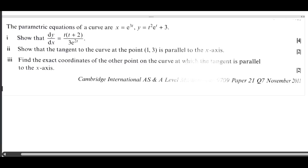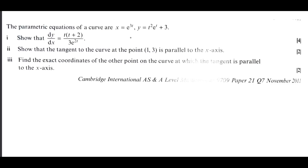The parametric equations of the curve are given: x equals e to the power 3t, and y equals t squared times e to the power t plus 3. We have to show that dy/dx equals t times (t plus 2) divided by 3e to the power 2t. Then we have to show that the tangent to the curve at the point (1, 3) is parallel to the x-axis, and find the exact coordinates of the other point on the curve where the tangent is parallel to the x-axis.